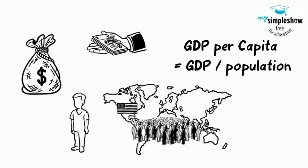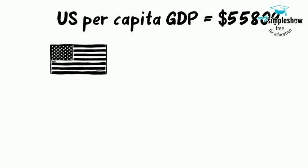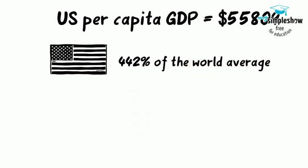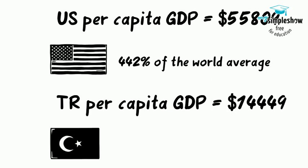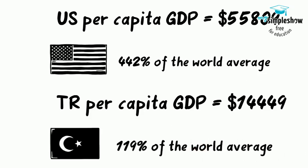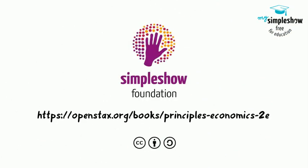GDP per capita equals GDP divided by population. The GDP per capita in the United States was last recorded at US$55,809 in 2019, equivalent to 442% of the world's average. The GDP per capita in Turkey was last recorded at US$14,999 in 2019, equivalent to 119% of the world's average.